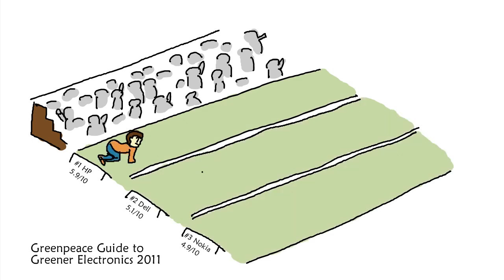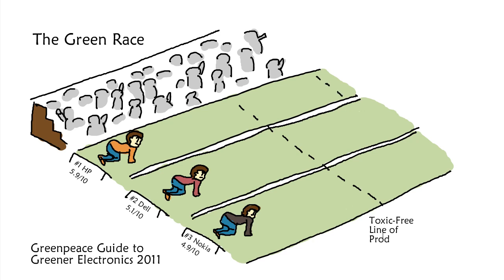Our job as consumers is to apply so much demand for a greener product that we get these big companies in a green race. We can start with demands such as having at least one toxic-free line of products on the market, or extending warranties so that instead of chucking out a phone when it dies, affordable repairs are available to extend its life.